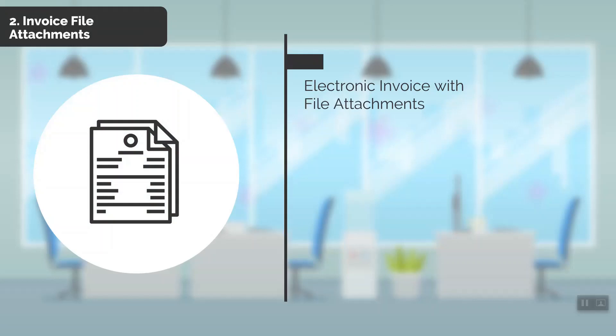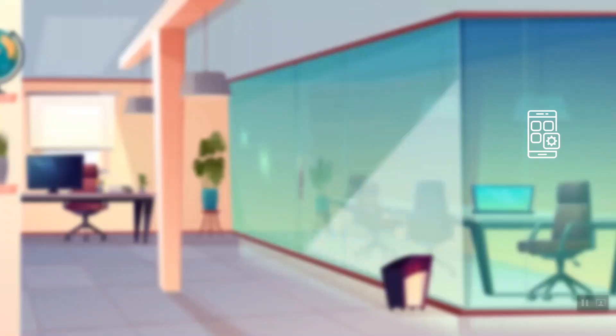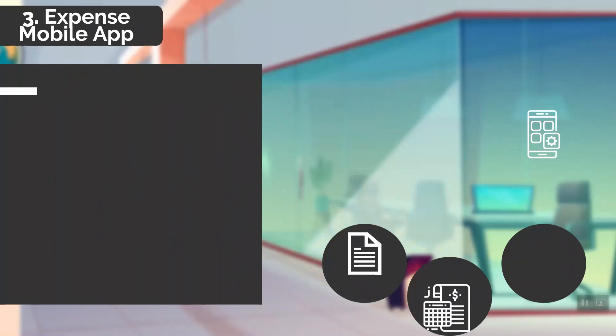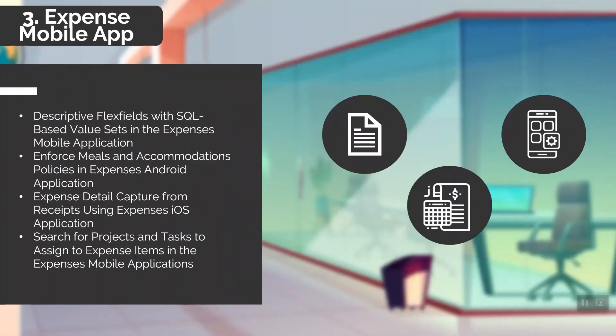Oracle really stepped up its game this quarter when it comes to the mobile expense application, which is helpful since the bulk of users are submitting expense reports on mobile. Oracle has a new feature called descriptive flex field with SQL-based value sets in the expense mobile application. Users can now select valid values for descriptive flex fields based on SQL queries using expense creation in the mobile application. The descriptive flex field also allows users to search for specific values when the list contains more than 25 values.